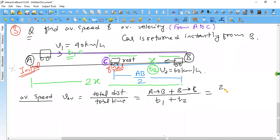How much distance is A to B? 2X. B to C is X. And how do you write T1? Distance upon time. So this will be 2X upon V1.